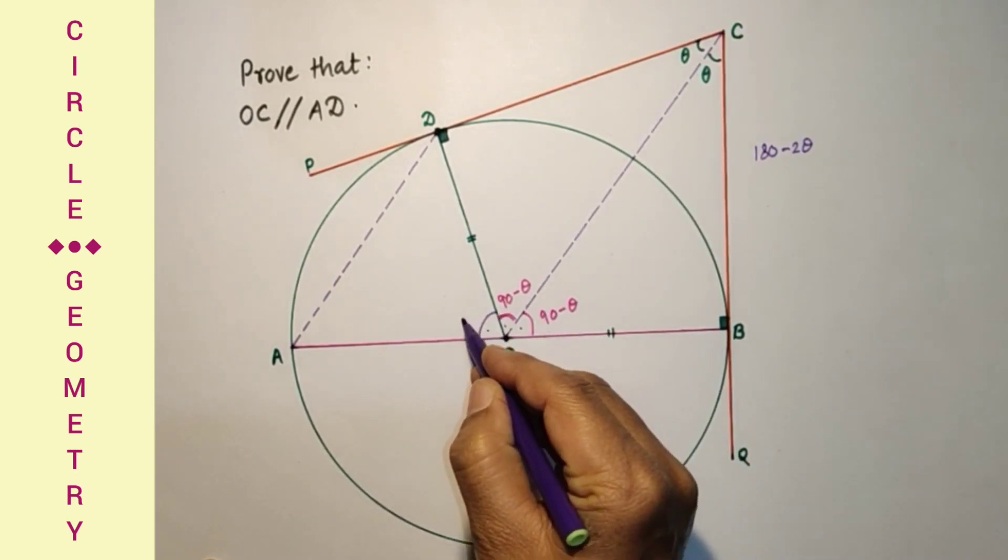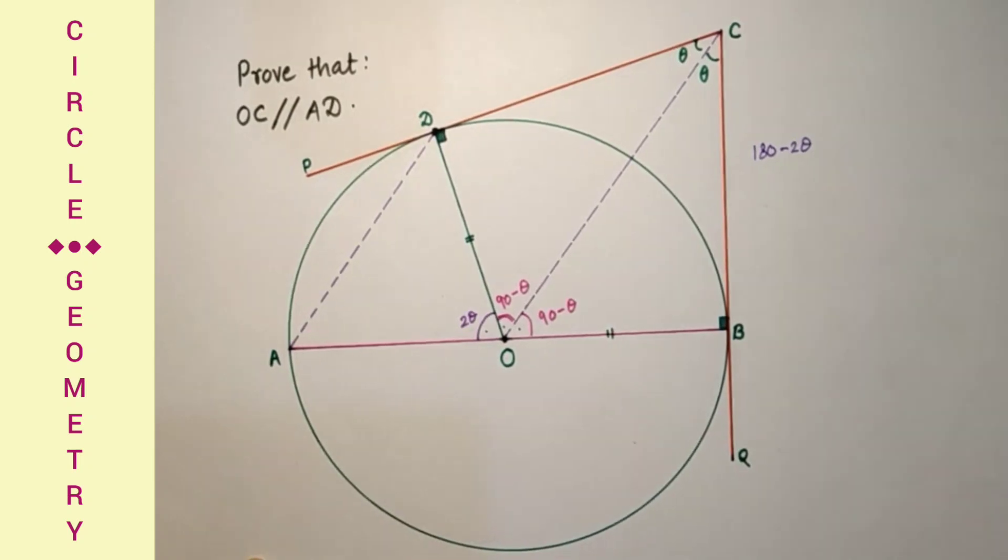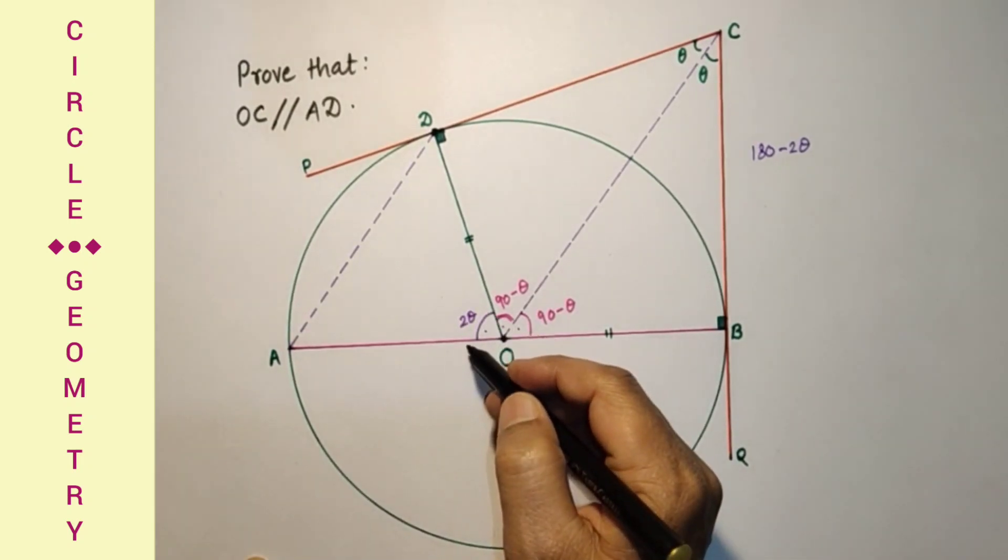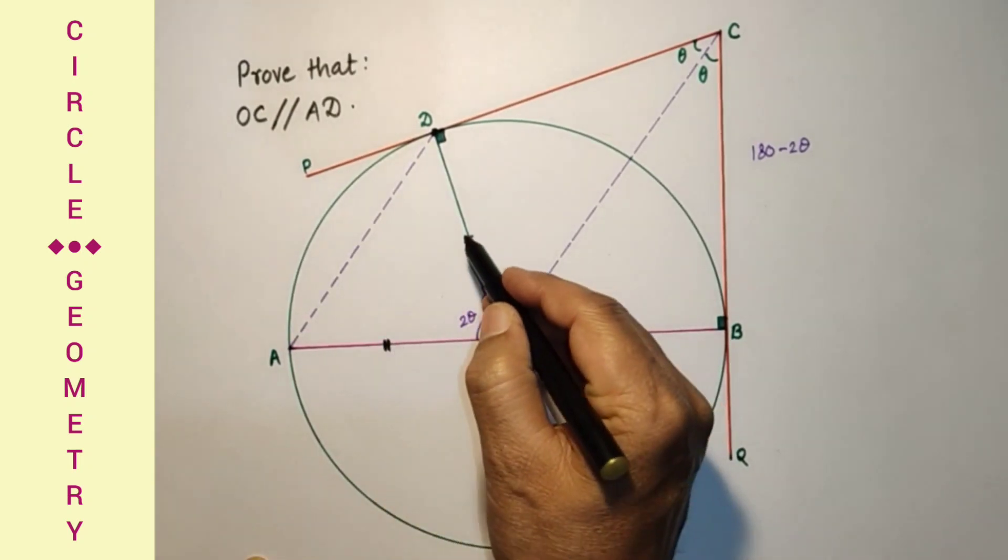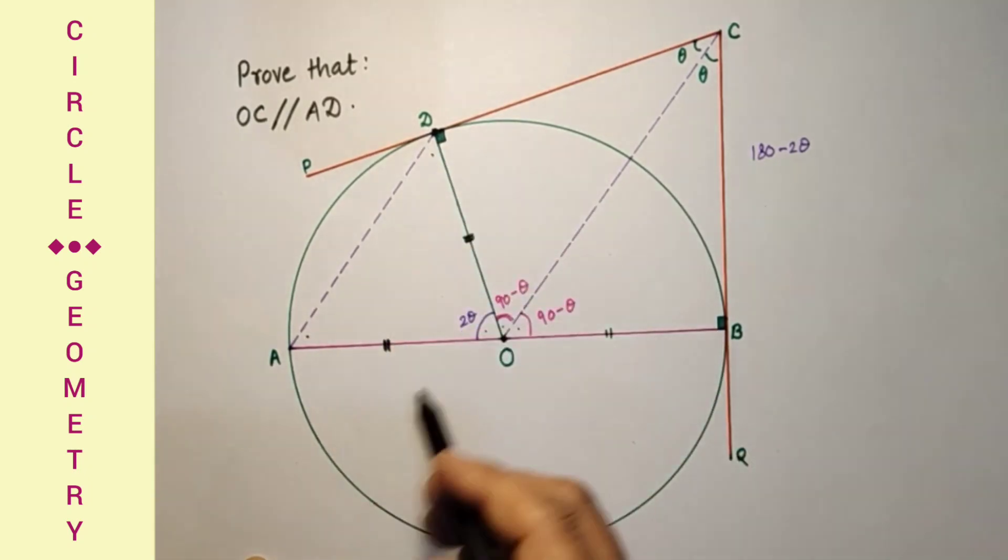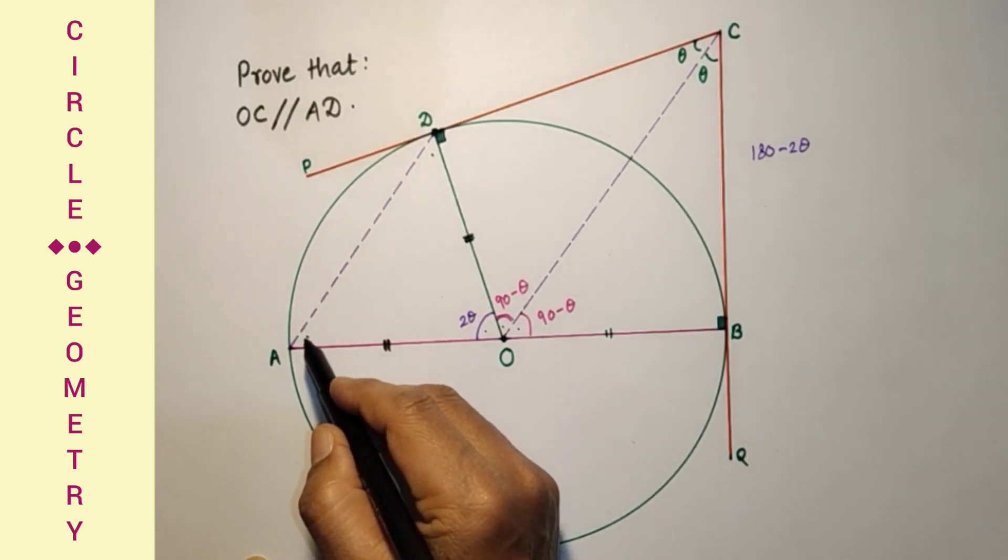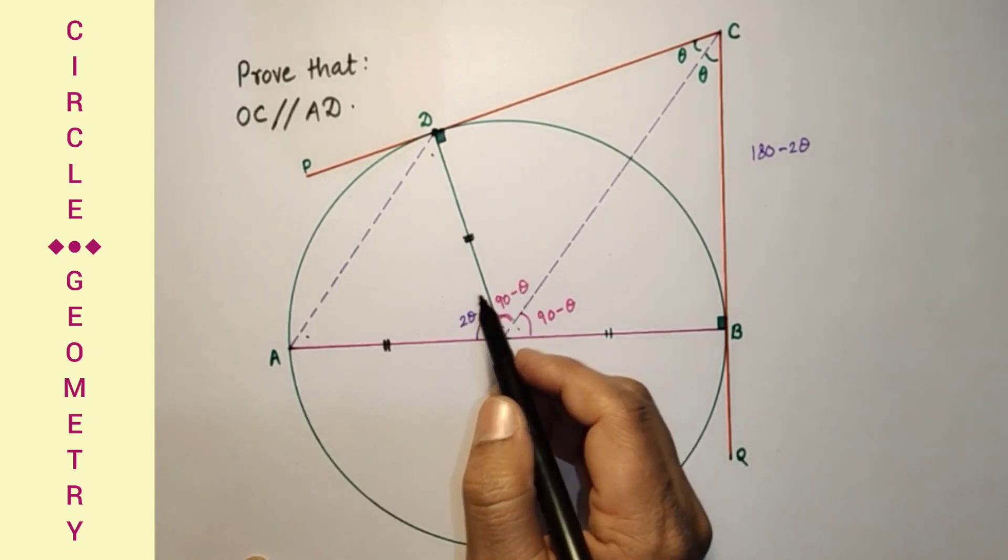This will be only 2 theta. Since this is 2 theta and these two are radii, these two angles will be equal, isosceles triangles base angles. To get this angle subtract 2 theta from 180 and then divide by 2.